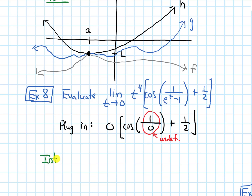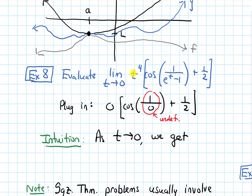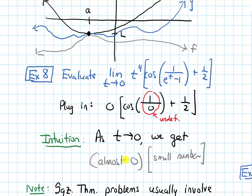This still gives us intuition. As t approaches zero, t⁴ is going to be almost zero — raising something close to zero to the fourth power makes it nearly zero. And cosine of anything is fairly small, always between −1 and 1. When you add 1/2 to it, it's still a small number. So something getting really close to zero multiplied by a small number seems to approach zero. Our intuition is that this limit should be zero, and we'll show it rigorously using the squeeze theorem.